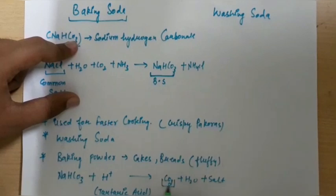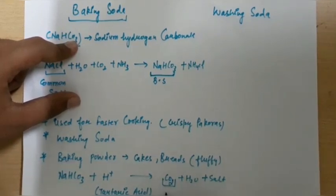Here CO2 which is formed is liberated to bakery items and leaves space or makes holes in it, due to which the bakery items can be fluffy. So baking powder is basically the combination of baking soda and tartaric acid.